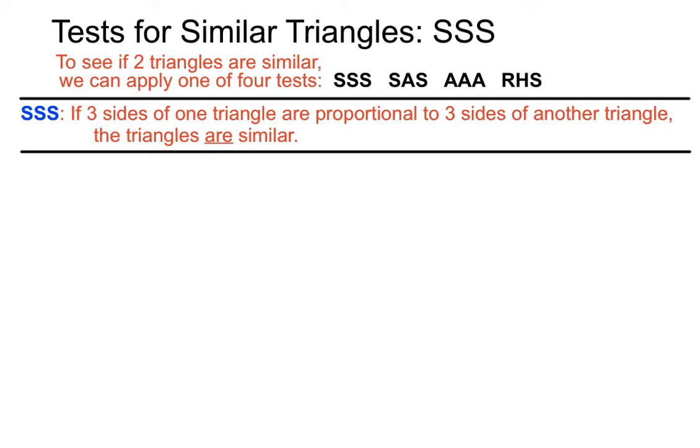Now another way of saying that, rather than saying are proportional, another way of saying is that if three sides of one triangle are in the same ratio as three sides of another triangle, then the triangles are similar. So it's either proportional or in the same ratio.